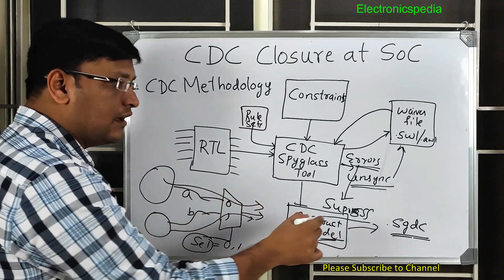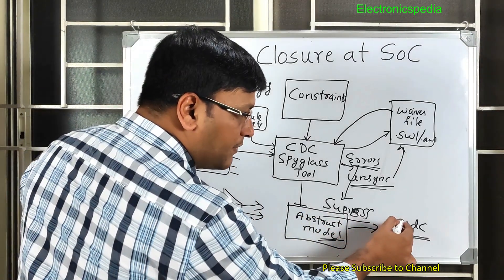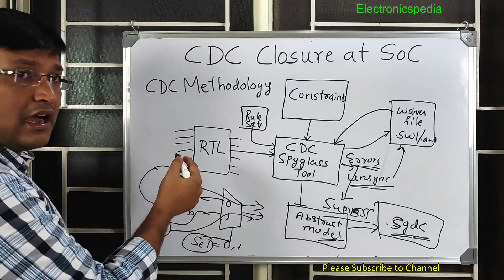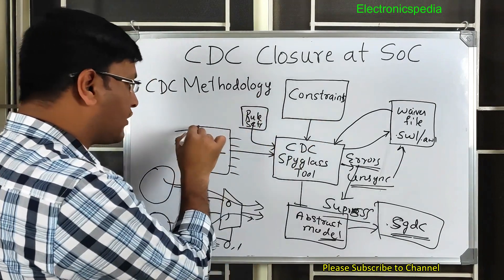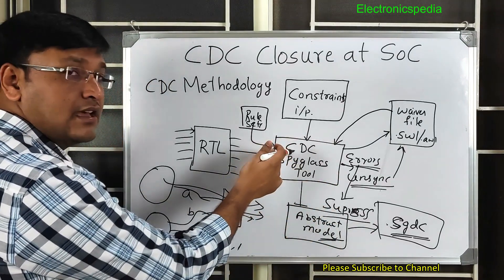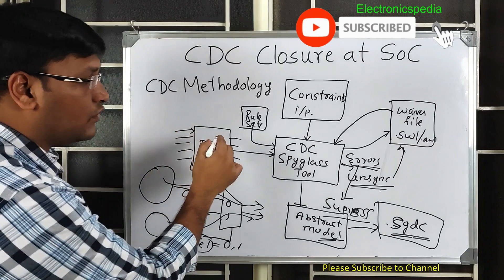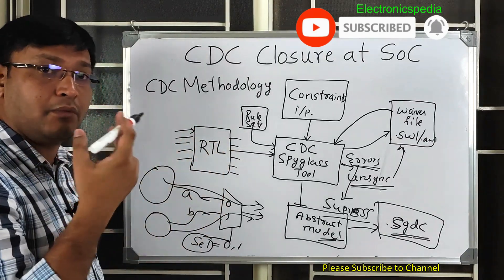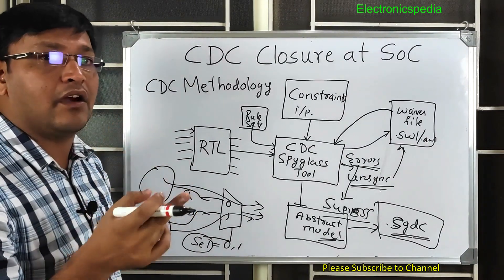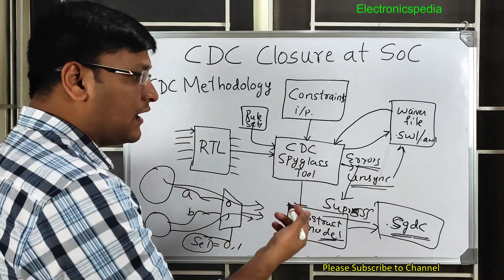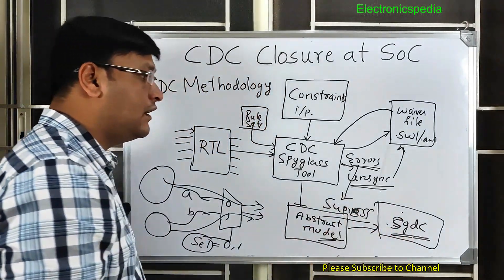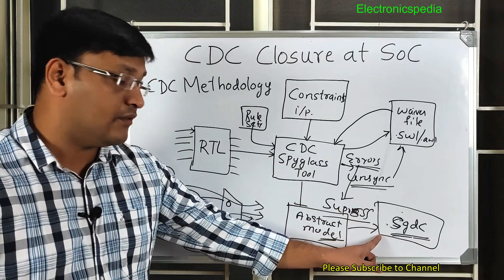The .stdc abstract model contains all port information about your RTL — input ports and output ports — and represents the abstract behavior of the entire RTL. Importantly, for output ports, SpyGlass analyzes how they are driven: whether by combinatorial logic or a flop, and whether they are synchronous to clock A or clock B. All of this information is captured in the abstract model.